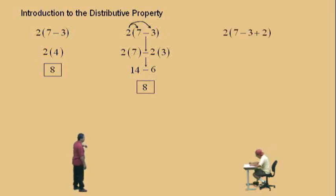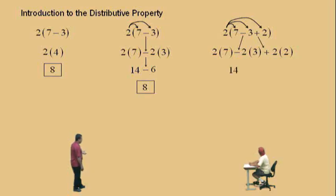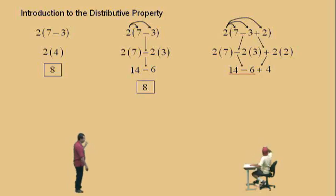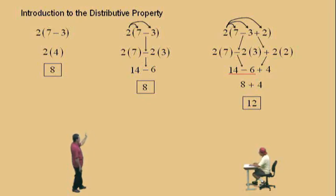Now we're going to distribute across a subtraction and an addition. Same process: 2 times 7 is 14. Bring down the subtraction, then 2 times 3 is 6. Bring down the addition, and then 2 times 2 is 4. Working left to right: 14 subtract 6 is 8, and adding 4 gives 12. The same answer could be gotten by doing the parenthesis first — 7 subtract 3 is 4, plus 2 is 6, times 2 is 12 — but we're demonstrating how the distributive property can be used.